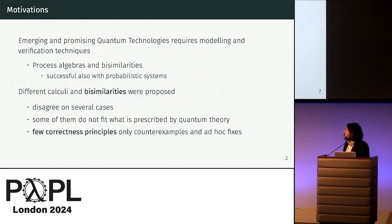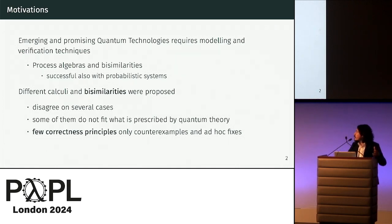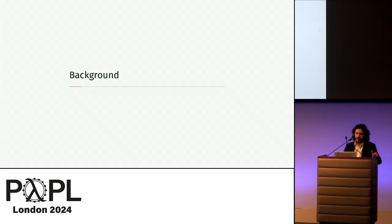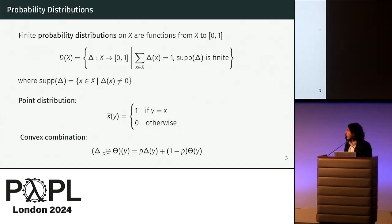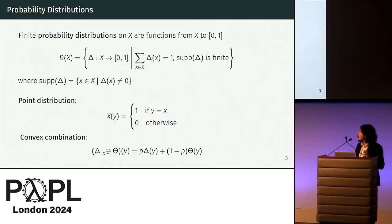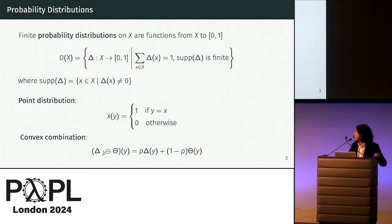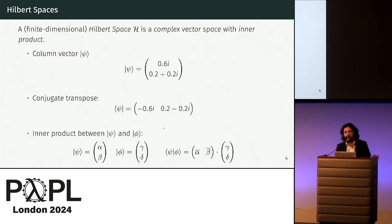Furthermore, when issues appeared, they were dealt with mainly by ad hoc solutions and few theorems connect the correctness principles pointed out by these works. Now, some very brief background just for notation purposes: in this work we will work only with finite support probability distributions. We use the overbar to denote point distributions, and then we have a binary operator to build convex combinations of distributions.